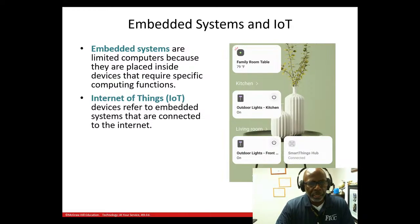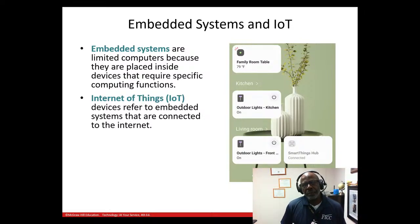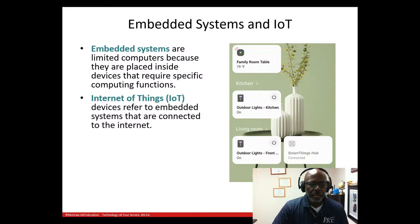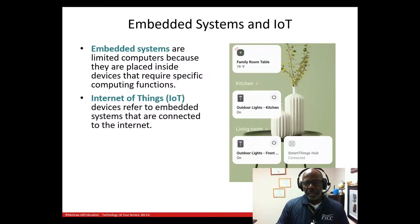Embedded systems and the Internet of Things — IoT — refer to computers basically inside of other devices. For example, if you're driving and your tire pressure light comes on, that's an embedded computer inside your tire sending a message to the main computer in your car. Also, a printer may have an embedded computer to tell the larger computer it's out of paper. The Internet of Things means everything is connected to the internet — a refrigerator that tells you to buy milk, a thermostat you control from your watch.